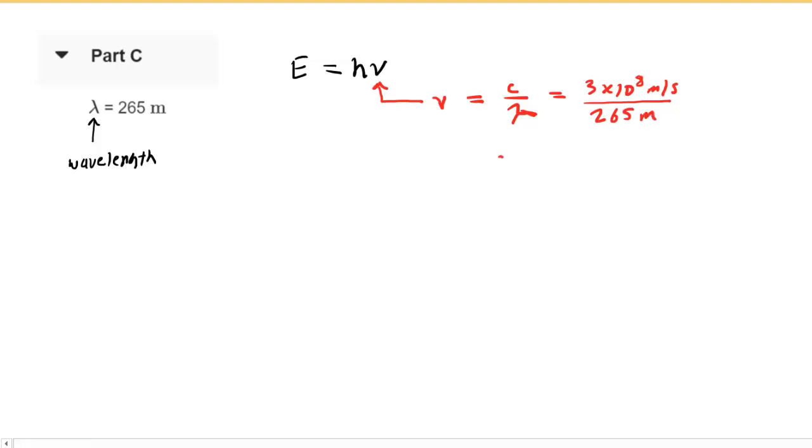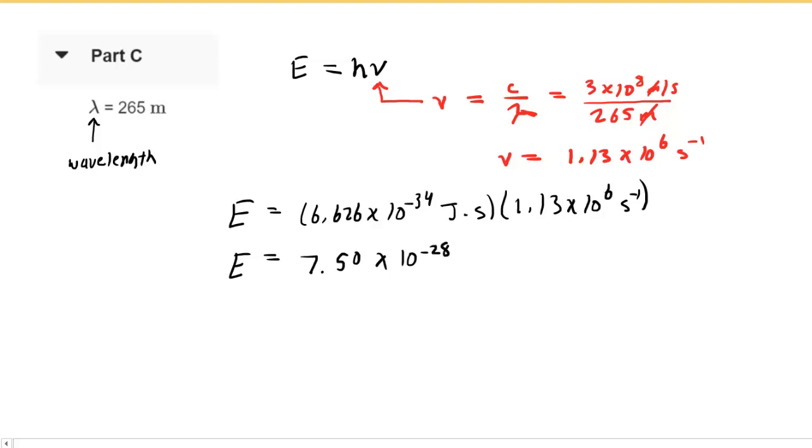When we calculate that, we see that the frequency is 1.13 times 10 to the power of 6. The meters would cancel, leaving us with inverse seconds. Now we can come back and calculate the energy of a single photon. When we do that, we get roughly 7.50 times 10 to the minus 28th joules per photon.